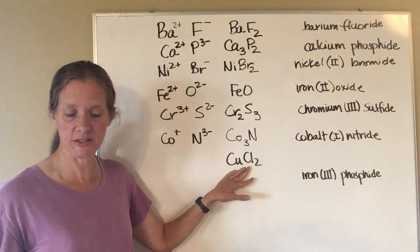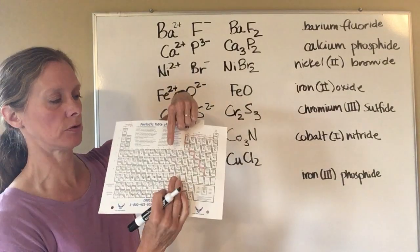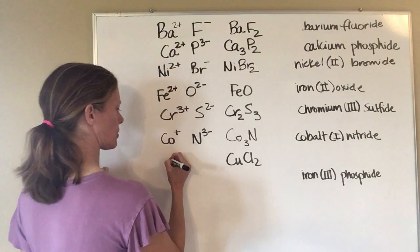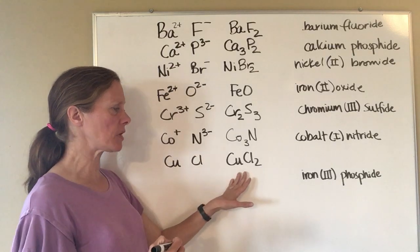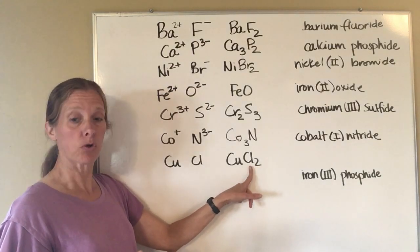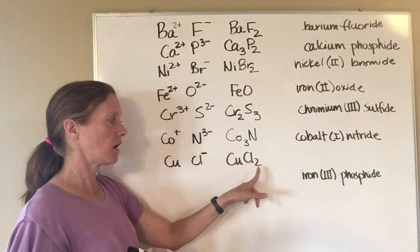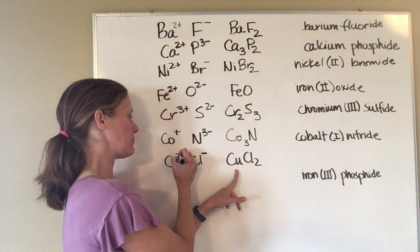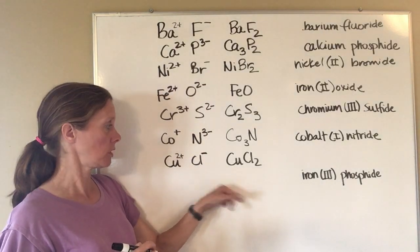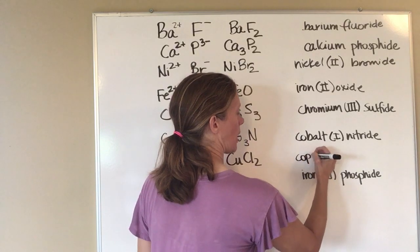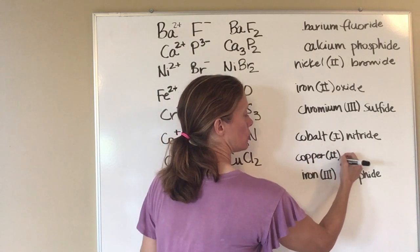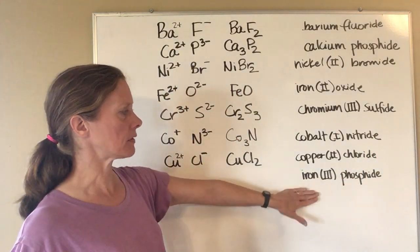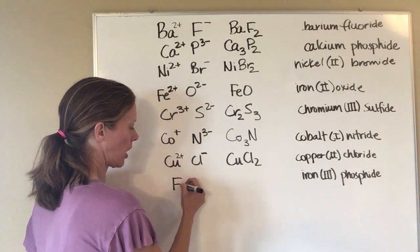CuCl₂: Cu on the periodic table is copper, located in the top row of the transition metals. To name it, I need to find the charge. Chlorine is in the second-to-last column, so it has a negative one charge. I have two chlorines, giving a total of negative two. To balance, copper must be positive two. So the name is copper(II) chloride.